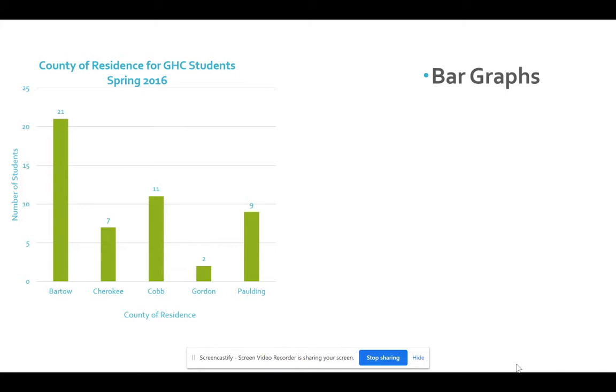And if you'll notice this graph here on the left, notice it has a title. It says County of Residence for GHC Students in Spring 2016. So I know immediately what it's telling me about. My horizontal axis represents the counties: Bartow, Cherokee, Cobb, Gordon, and Paulding. And then the vertical scale represents the number of students. The height or the length of your bars, which mine are displayed in green here, represent the frequency of the category. And one of the things that this particular graph does as well is notice at the top of the bar, it puts the number 21. So I know there were 21 students in Spring 2016 that lived in Bartow County.